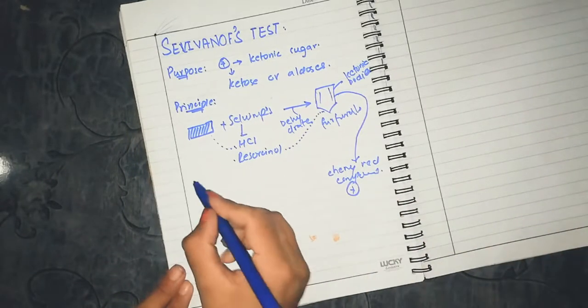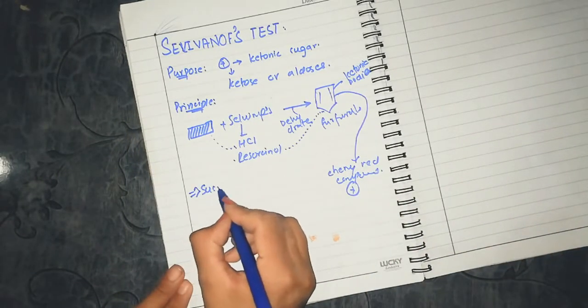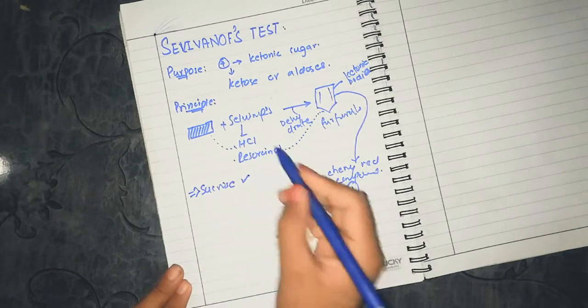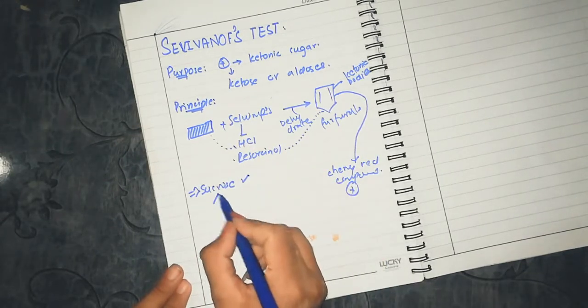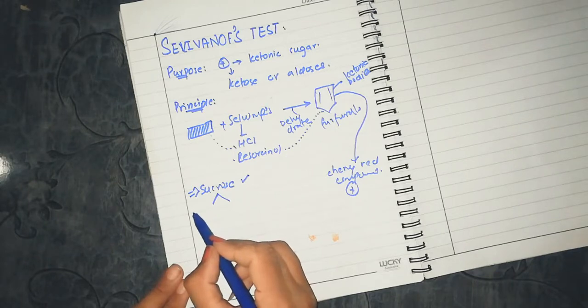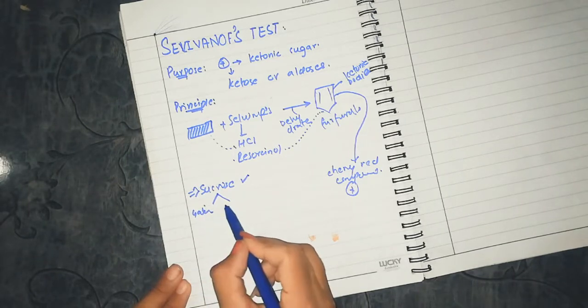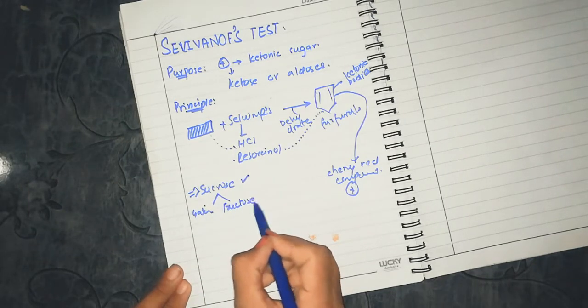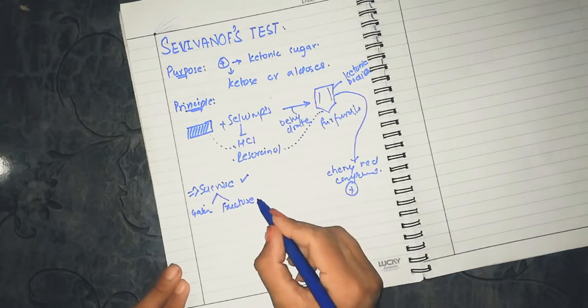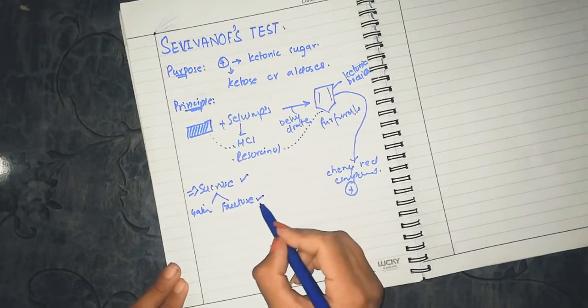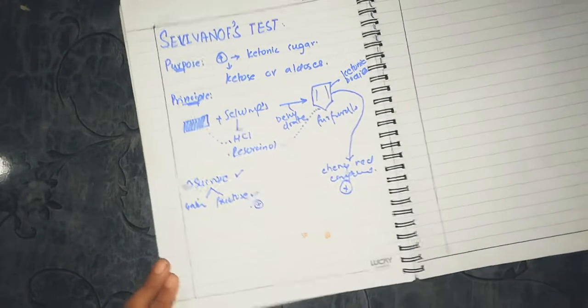Sucrose also gives a positive test because HCl is such a strong acid that it hydrolyzes sucrose, releasing glucose and fructose. Since fructose has a ketonic group, the test is positive.